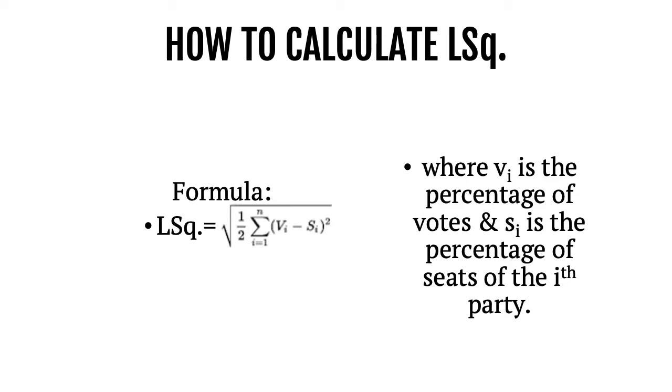In order to calculate the least squares index, we need to apply the following formula: square root of half the sum of the difference between the percentage of votes and the percentage of seats squared.